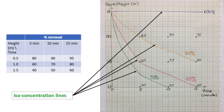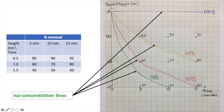You can choose whichever percentage lines you like. If you want to draw an 85 percent line instead of 80 percent, that is fine — just find where 85 percent falls and connect those points. The choice is up to you; the instructor chose simple lines like 80, 60, and 50 percent for this example.